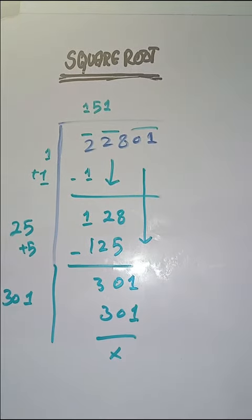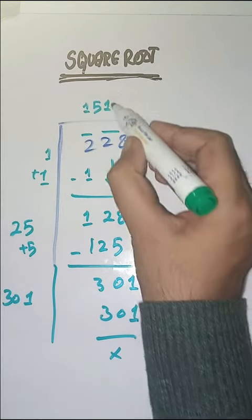So this is completely solved. So square root of 22801 is 151.